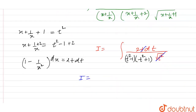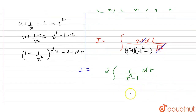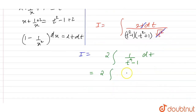So i is equal to — let's separate it out to make our solution more precise. We have i is equal to 2 times the integral of 1 by a plus b into a minus b, that is t raised to power 4 minus 1, with respect to dt. So we have 2 times the integral of 1 upon t squared whole squared minus 1 whole squared, with respect to dt.